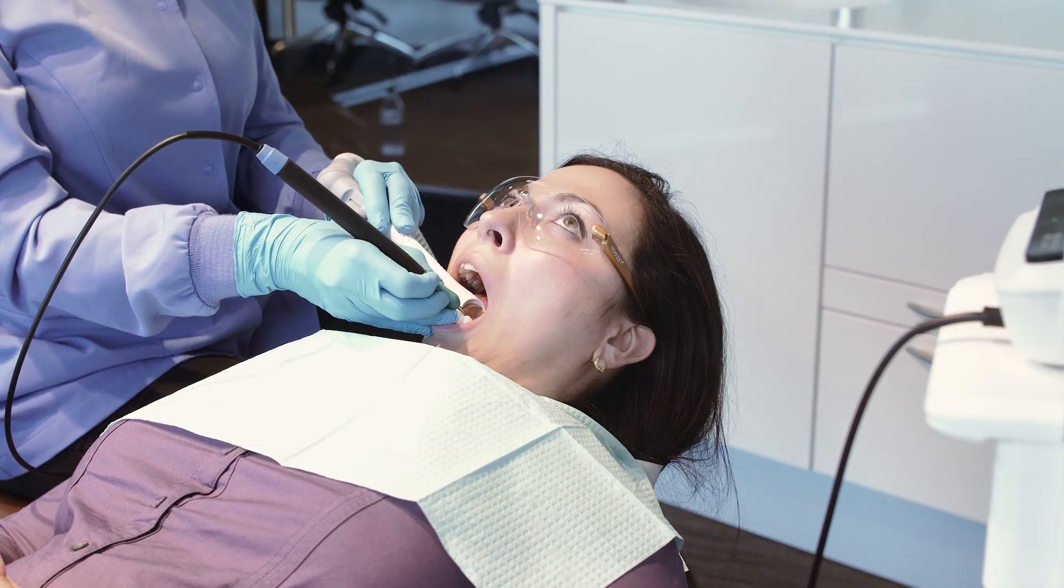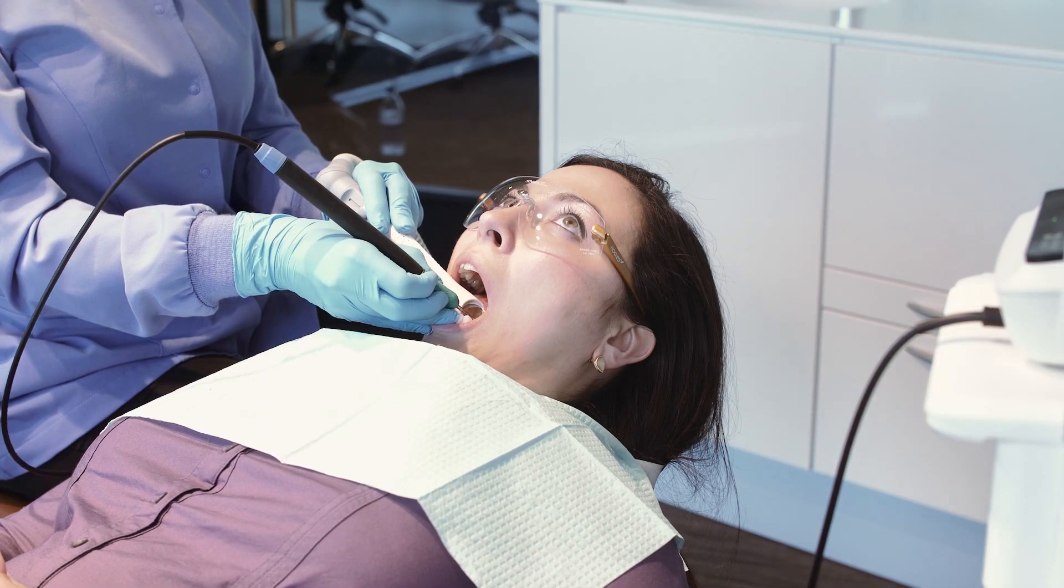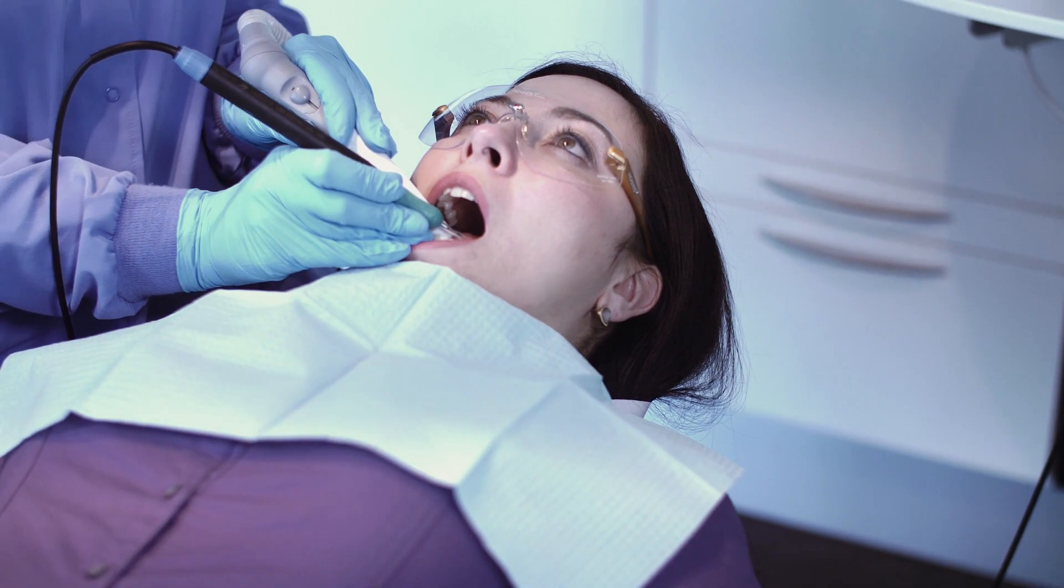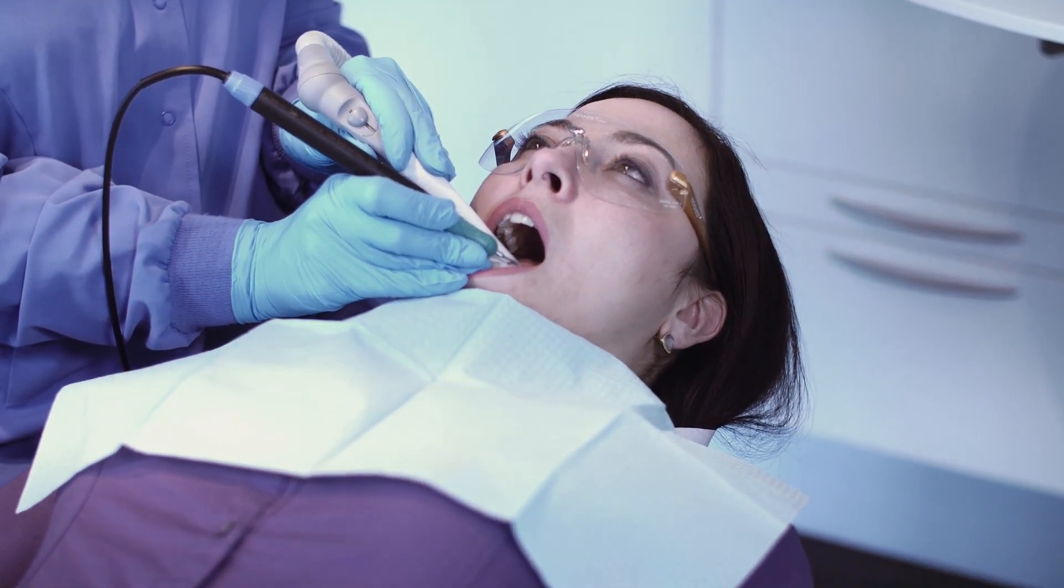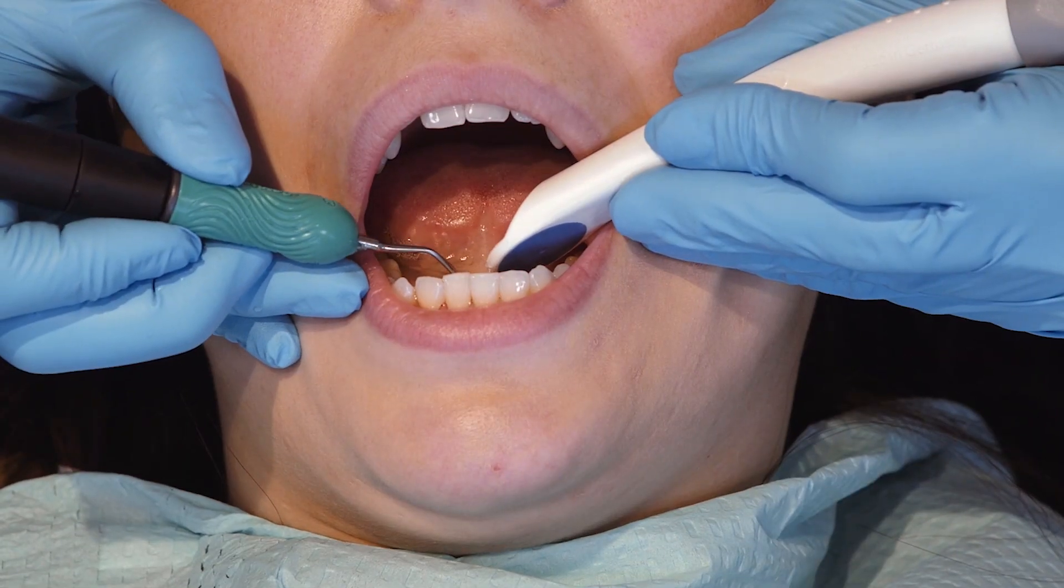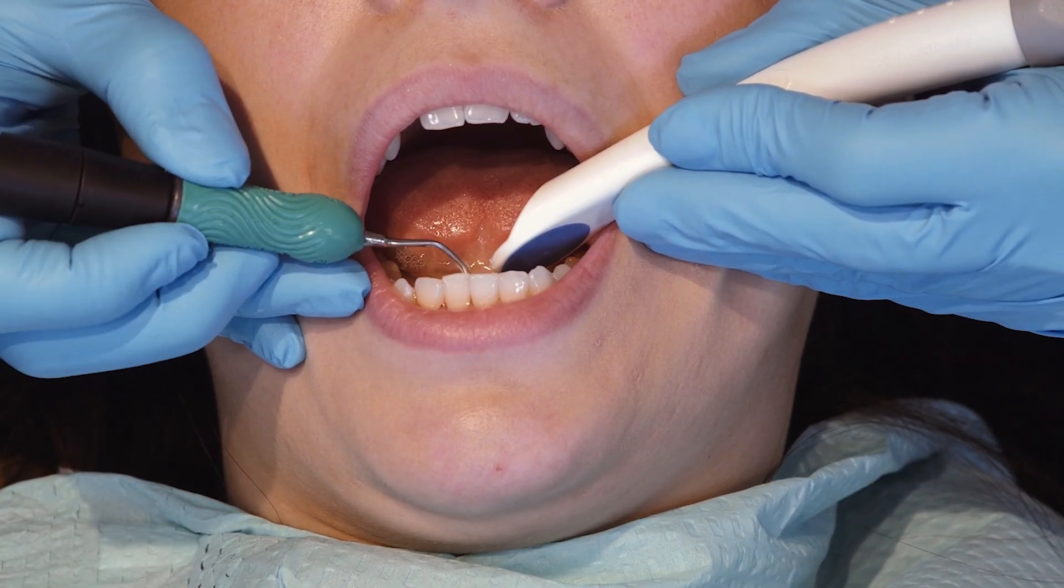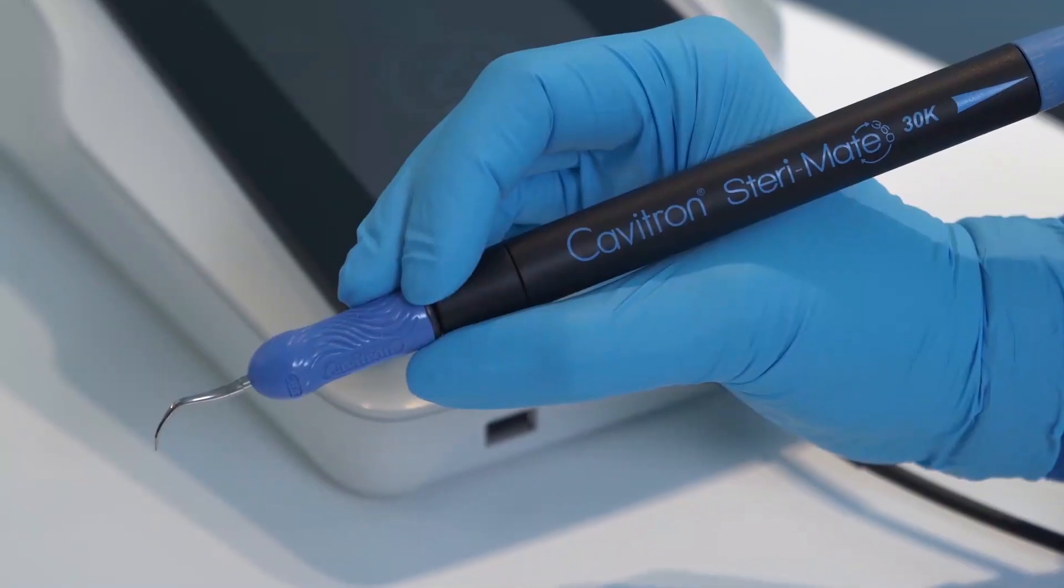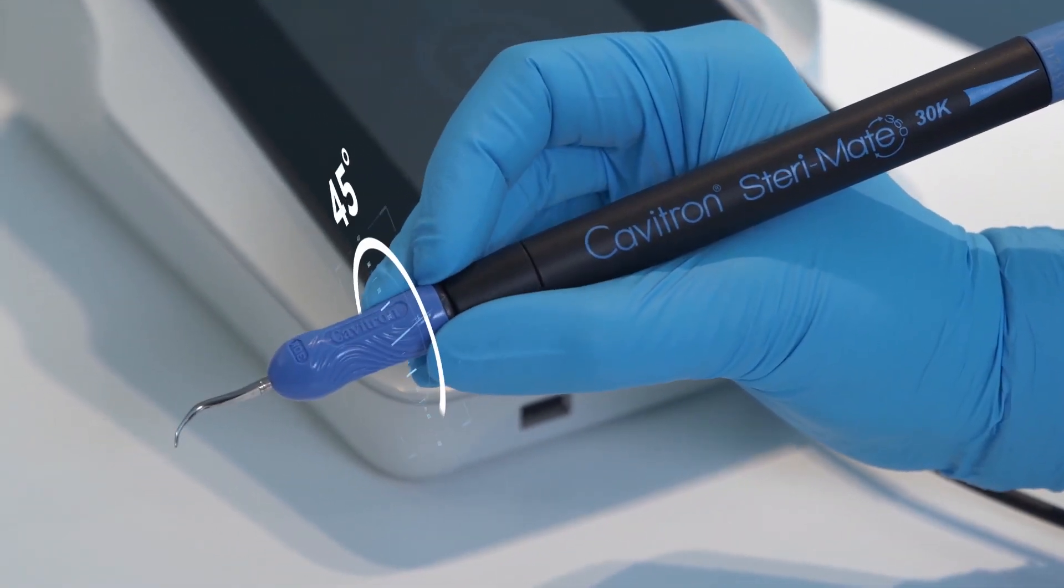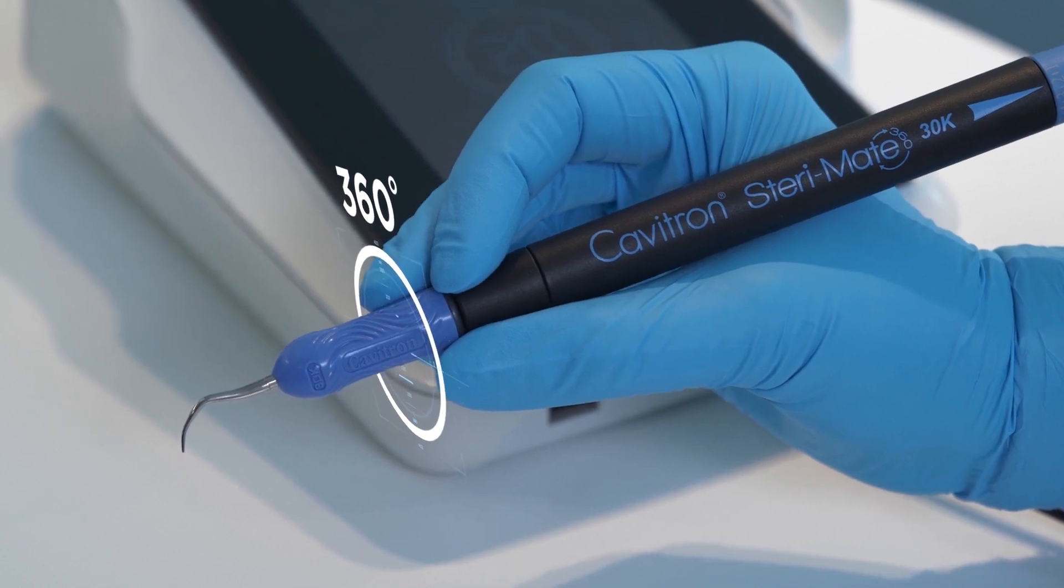The Steramate 360 handpiece provides the clinician the effortless rotation of the ultrasonic insert with their fingertips. This allows adjustable hand positioning, free-flowing movement, and easy access within the anterior and the posterior of the oral cavity. To rotate the ultrasonic insert, place fingers on the nose of the handpiece and rotate to your desired position.